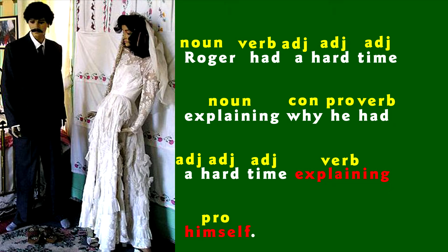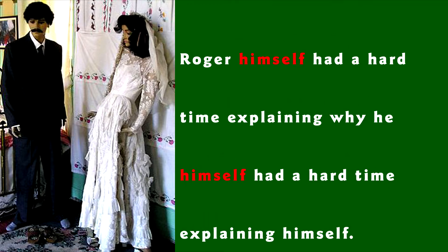If you really wanted me to make it more complicated — oh, please! You could say: 'Roger himself had a hard time explaining why he himself had a hard time explaining himself.' Here we added a couple of intensive pronouns to emphasize 'Roger' and 'he.' They look a little inaccurate because we have a reflexive pronoun in the subject, but it is correct.